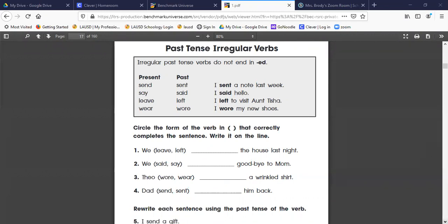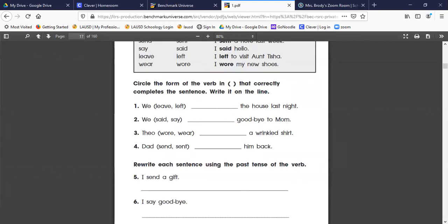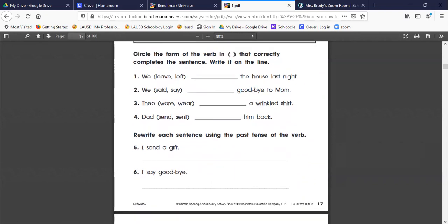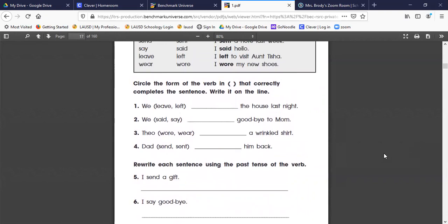So we're going to do the last two. We're going to rewrite the sentence changing the verb, making it past tense. So number five says: I send a gift. We're going to change send to sent. I sent, S-E-N-T, a gift. Don't forget to start with a capital and end with a period. We changed send to sent.